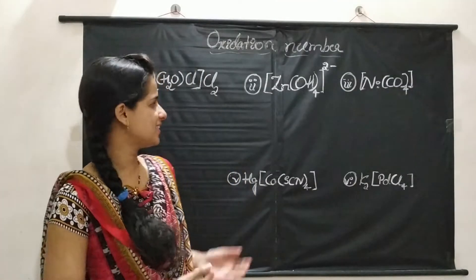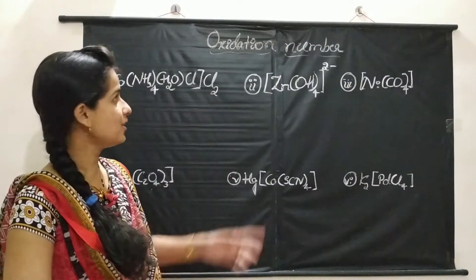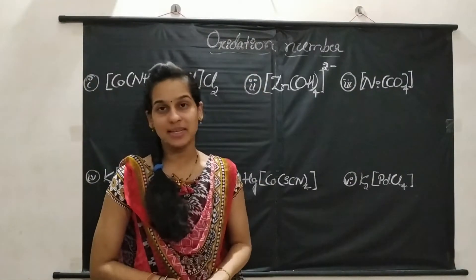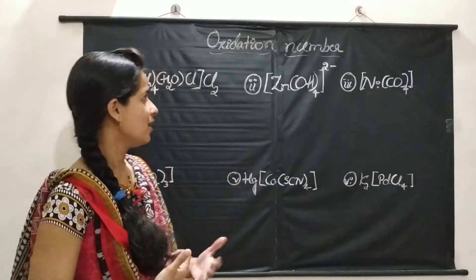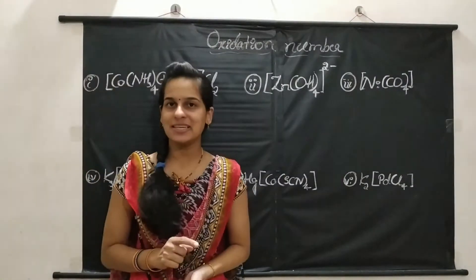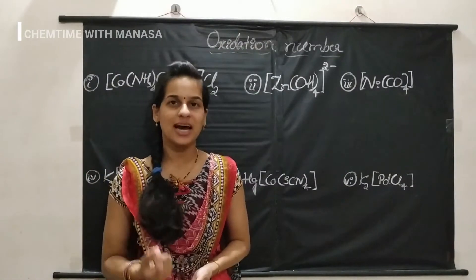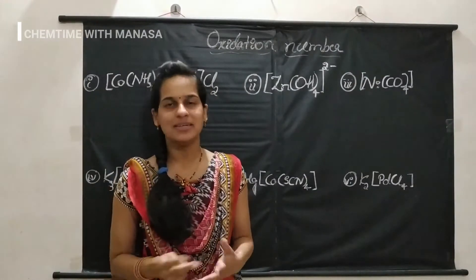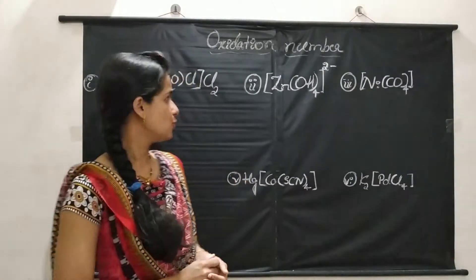Friends, now let us consider some examples to calculate the oxidation number of the central metal atom of a coordination complex. As you know, the steps are: first step is find out the charge of the coordination sphere, and second step is writing the equation.